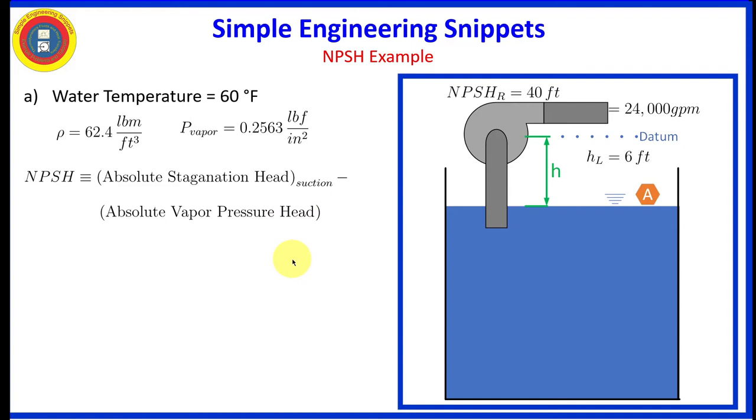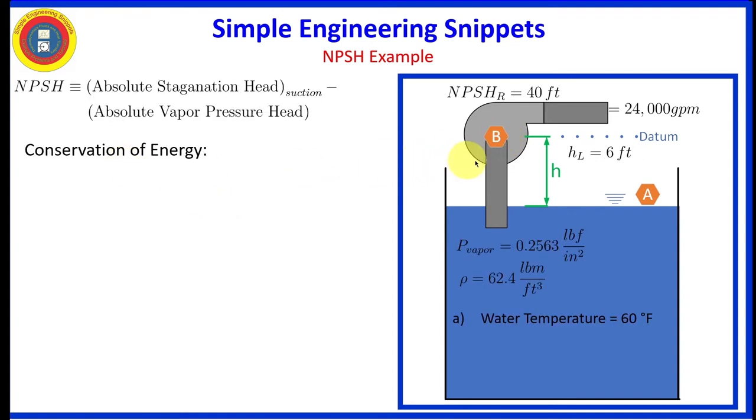Okay, let's select some points to apply conservation of energy. Alpha will be the free surface of the water, and Bravo will be the pump suction. Conservation of energy tells us that the energy at Bravo is equal to the energy at Alpha minus the head loss from Alpha to Bravo. And that's convenient because we are actually supplied with this head loss from Alpha to Bravo.